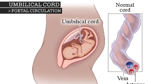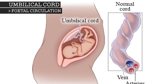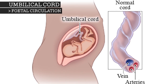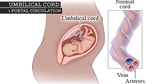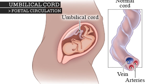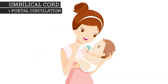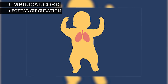During pregnancy, the fetus's blood circulates differently than it does after birth. This is because during pregnancy, the fetus relies on its mother and her blood for nourishment and oxygen, whereas after birth the baby will be able to receive nourishment by ingesting food and oxygen by breathing with their lungs.